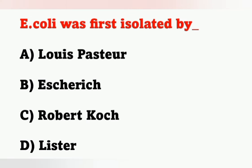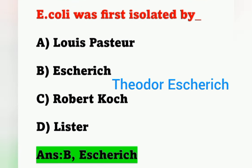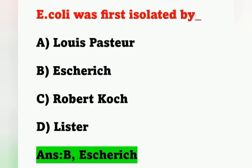The next question: E. coli was first isolated by whom? Options: Option A, Louis Pasteur; Option B, Schick; Option C, Robert Koch; Option D, Lister. E. coli (Escherichia coli) was first isolated by Theodor Escherich, a German physician — hence the name Escherichia coli.